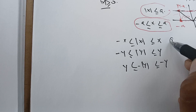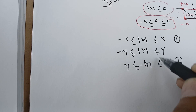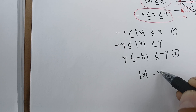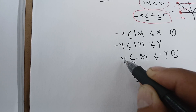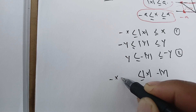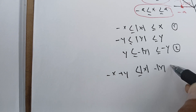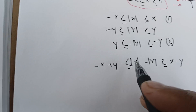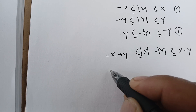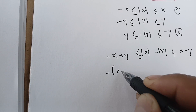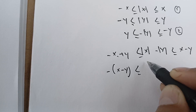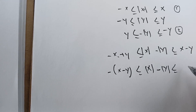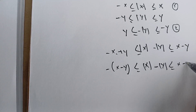Now if we multiply by a minus sign, we're going to have minus Y is between Y and minus Y. Adding these two inequalities, we get the absolute value of X minus the absolute value of Y. On the left side we get minus X plus Y, and on the right side I get X minus Y. I'm going to write the left side as minus of X minus Y, and the right side as X minus Y.